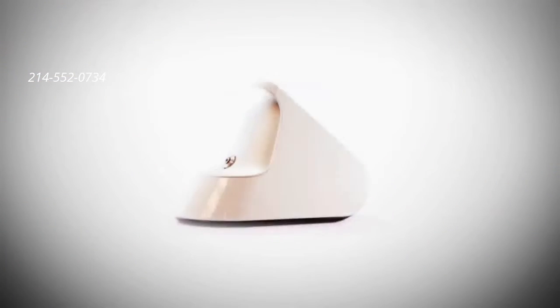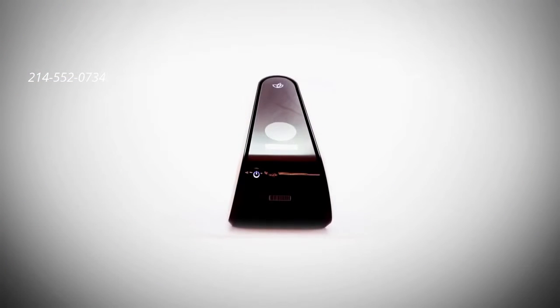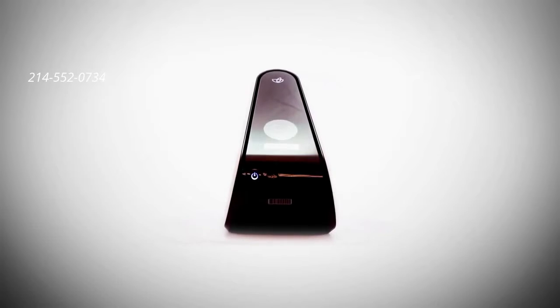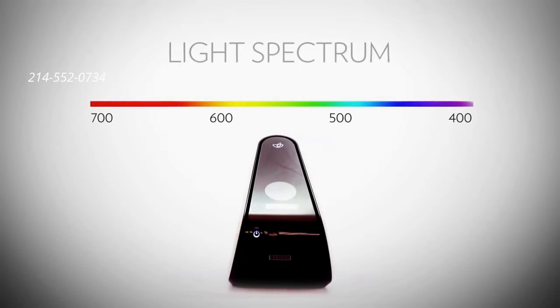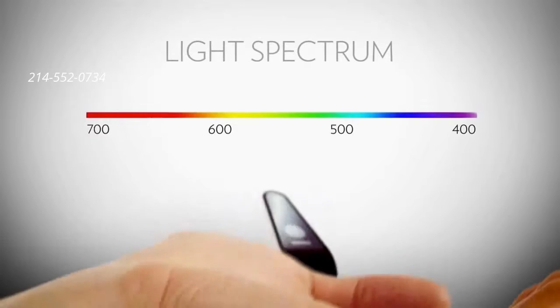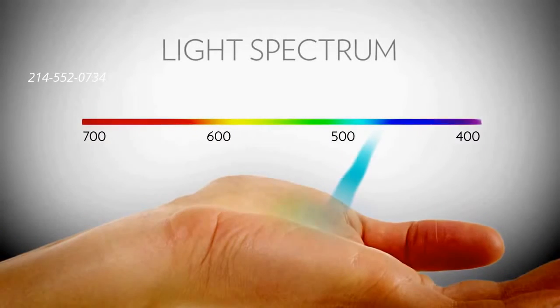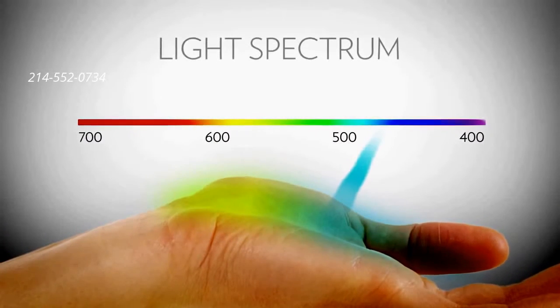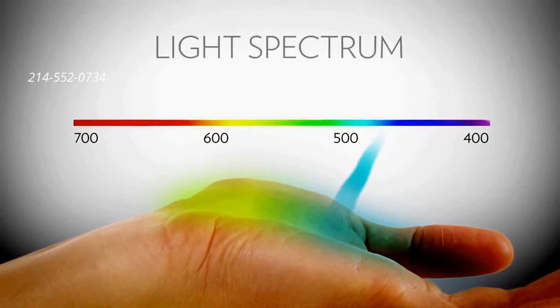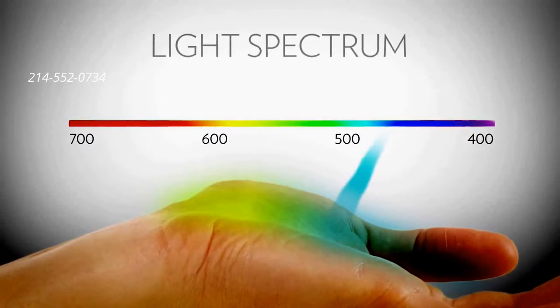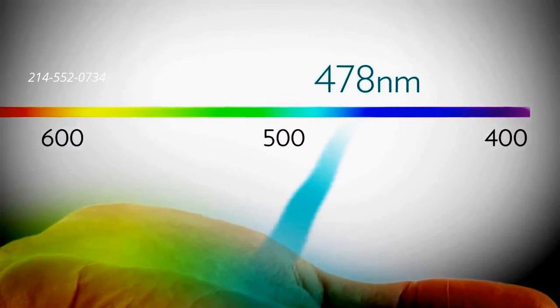To understand the scanner's technology you must first understand light. White light has all different wavelengths represented by colors. The scanner produces a narrow beam of light in which all of the photons are the same color blue, but a blue that is engineered specifically to be exactly 478 nanometers in wavelength.